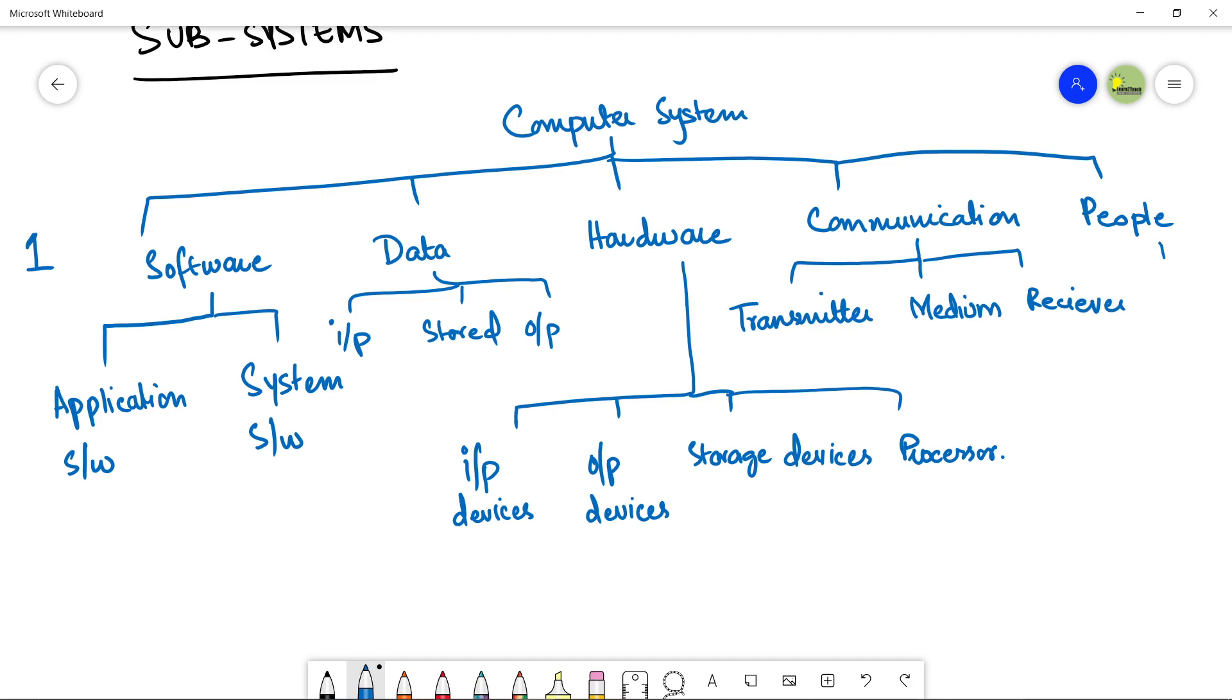And then finally, the user. The subsystem user can be divided into two. It can be a developer that builds up a computer system. And it can be a user that uses a computer system. So, this is level two.